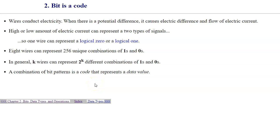Internally, in computer circuitry, wires conducted electricity. When there is a potential difference, it causes electric difference and flow of electric current. High or low amount of electric current can represent two types of signals, either logical zero or logical one.